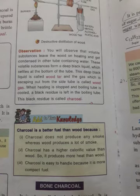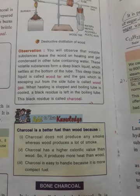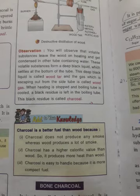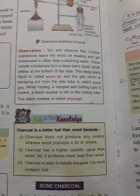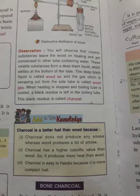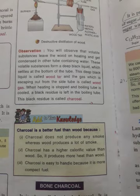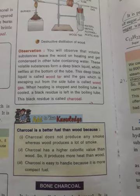Charcoal can also act as a reducing agent, which we will study in detail later. Now, bone charcoal is obtained by the destructive distillation of bones. It is a good adsorbent, and because of this property, bone charcoal is also used as a decolorizing agent for removing the brown color from sugar.